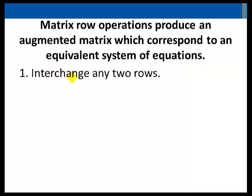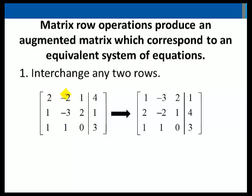The first matrix row operation is to interchange any two rows. So if I look at this matrix I will interchange row 1 with row 2 and have the new matrix which now has a row 2 of 2, negative 2, 1, 4 and a row 1 of 1, negative 3, 2, 1.